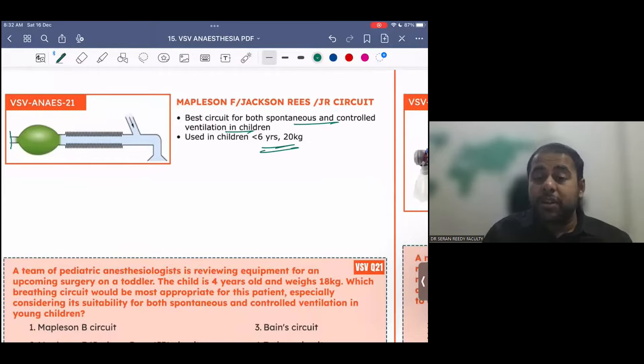When a question comes, which is the best circuit for spontaneous ventilation in children? Answer Mapleson F. Which is the best circuit for controlled ventilation in children? I mean, among the Mapleson circuits. It is Mapleson F.